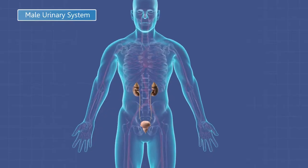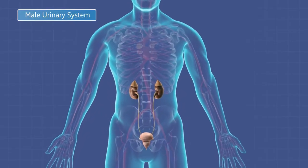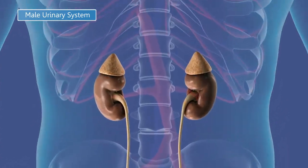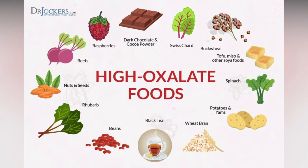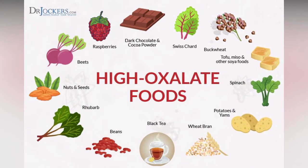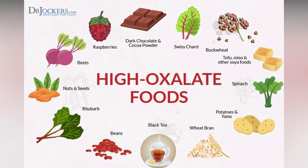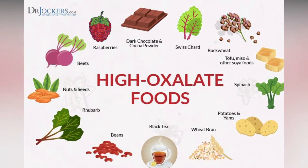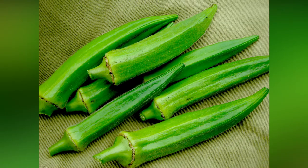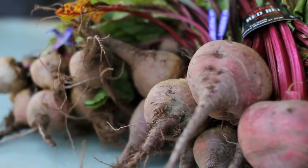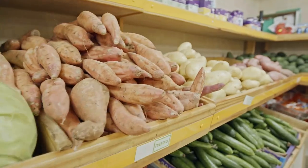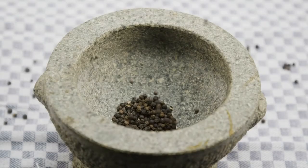Those who are prone to having calcium oxalate stones are better off restricting foods rich in oxalates. Some of these foods include chocolate, okra, beets, sweet potato, and black pepper.